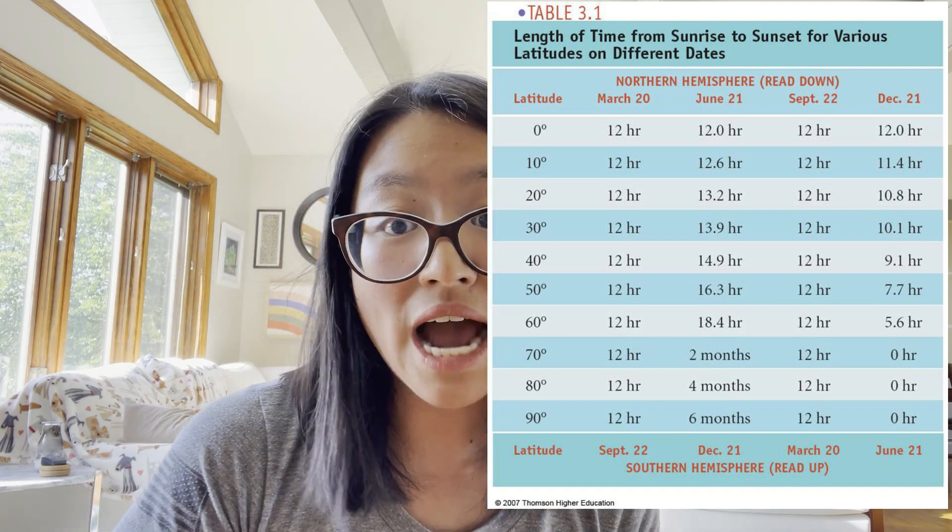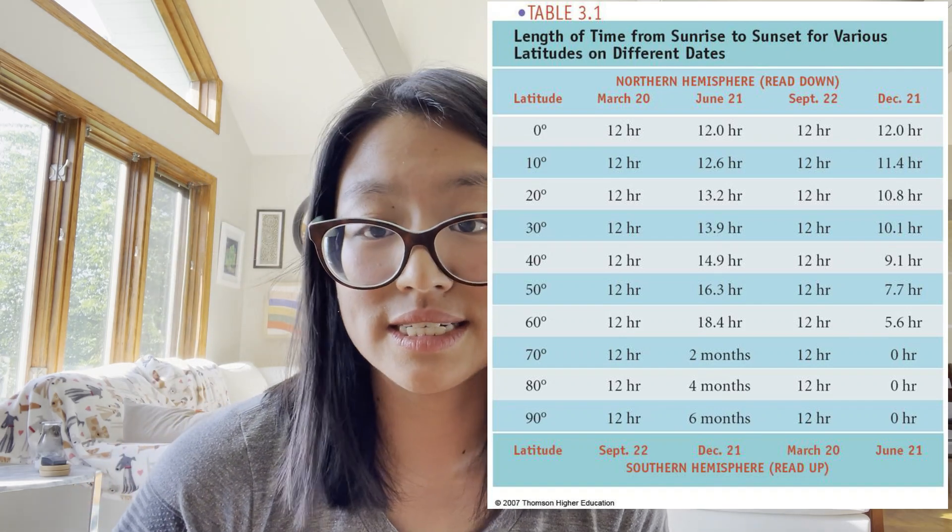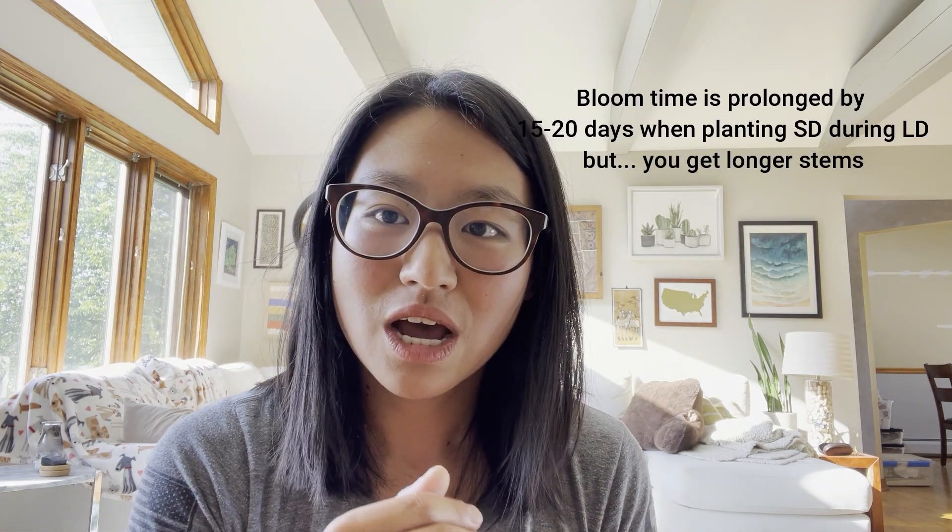If you live further south — say Florida, Louisiana, or Texas — you have a longer growing season because it's warmer, but it does not necessarily mean you have different day length conditions. You actually have similar day length conditions during winter and fall months. So if you're planting a short day variety during those months and you have the right temperature but not the right day length, you might get flower initiation with shorter stems.